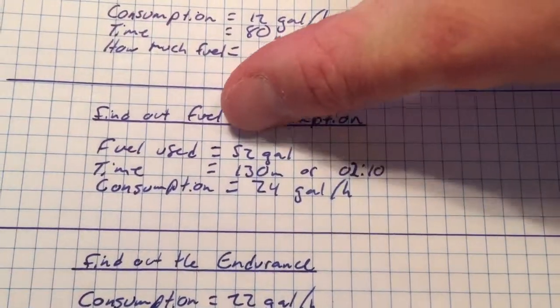This will be video number five using the Pooley CRP-1 computer, and here we're going to find out the fuel consumption. We know that the time is 130 minutes, or 2 hours and 10 minutes.